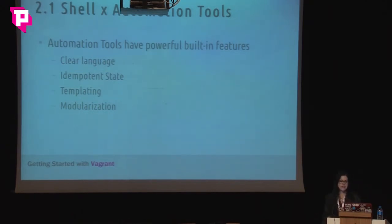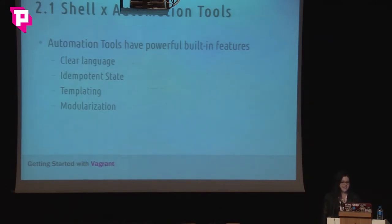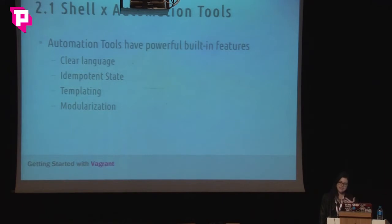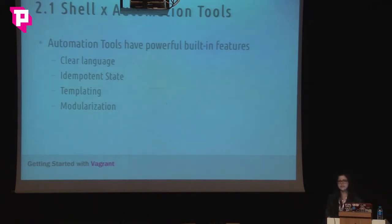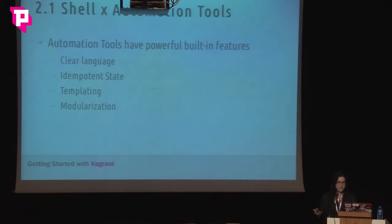Some of the features that automation tools have: they have a clearer language, making it easier to understand what's being done — it's not like shell. They have an idempotent state, which means the results will always be the same. If you create new tasks, it will only execute the tasks that weren't run before — it saves the state of the machine, so if you make changes to the provision, it will only run the changes. They also have templating, which is very useful for setting up configuration files — like changing the host configuration for Nginx or Apache.